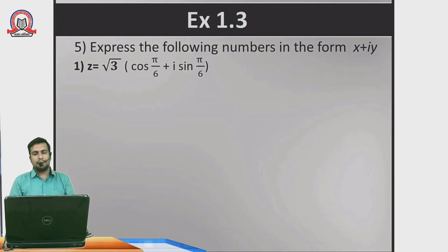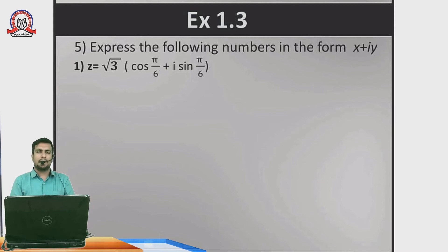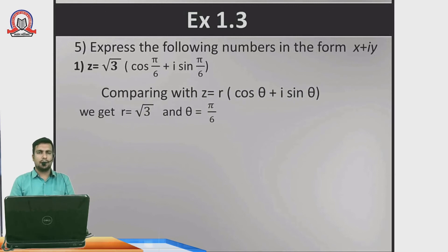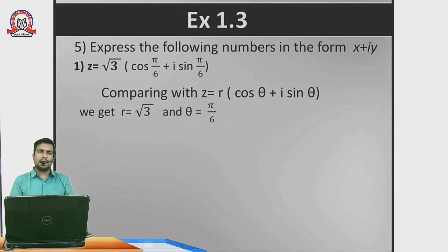Exercise 1.3: Express the following numbers in the form x + iy. The question gives z = √3(cos(π/6) + i sin(π/6)) in polar format. We compare it with z = r(cosθ + i sinθ), so r = √3 and θ = π/6. Converting to degrees: π/6 × (180/π) = 30°. If you need a refresher on angle and radian measurement, please visit the SST Edupedia YouTube page for the full chapter.